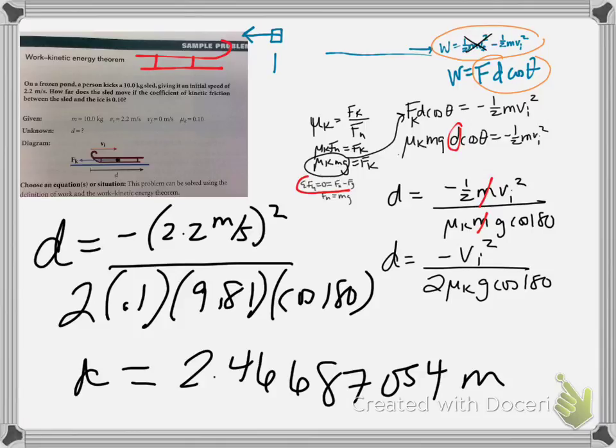Hey, yay, we got it right. The book, actually, their sig figs are wrong, as usual. So they say it's 2.4. Of course, we know it would be 2.5 meters. So this thing goes 2.5 meters before it comes to a stop.